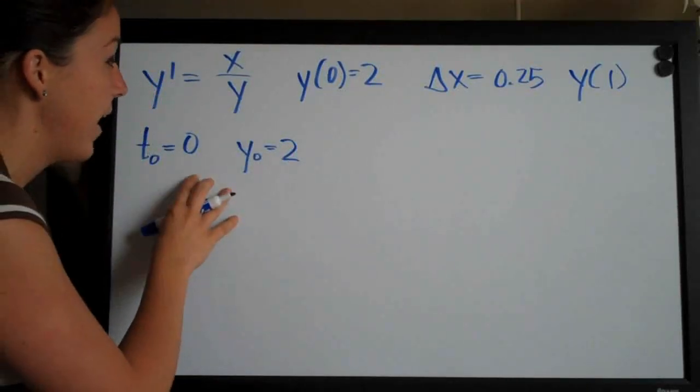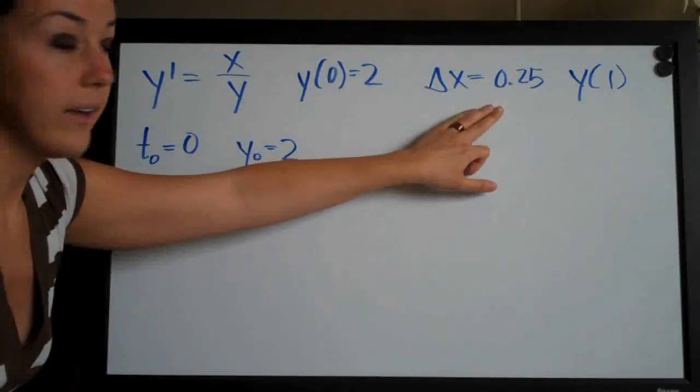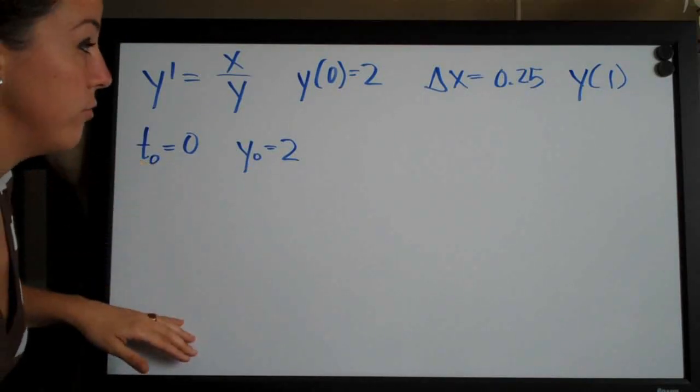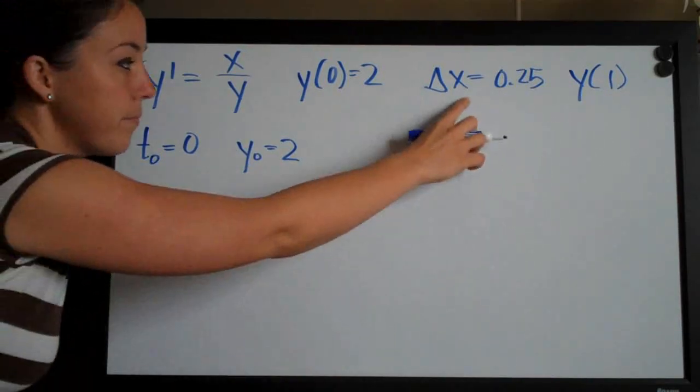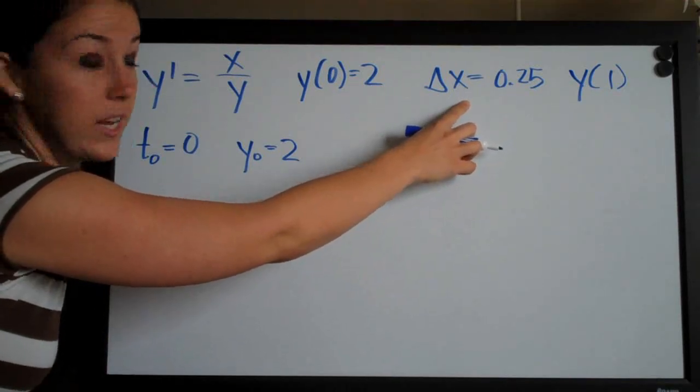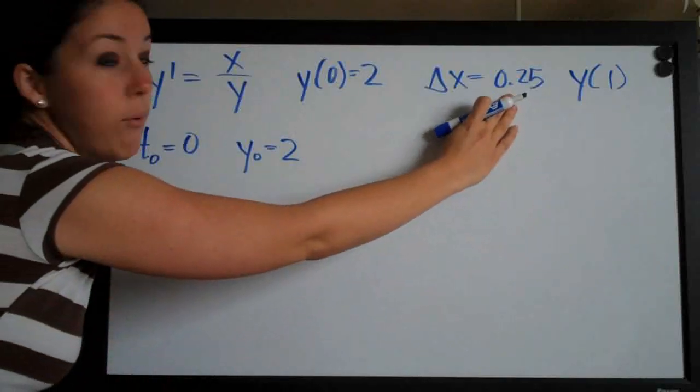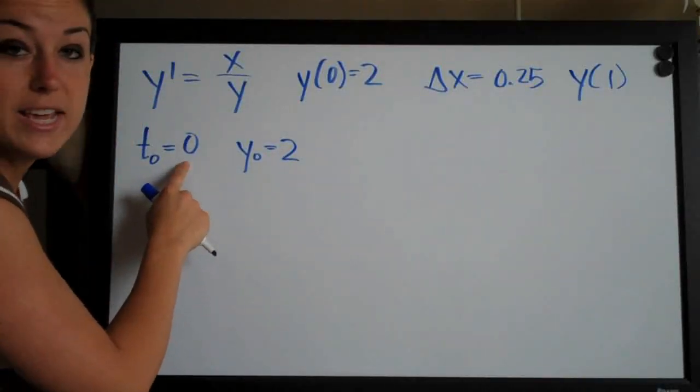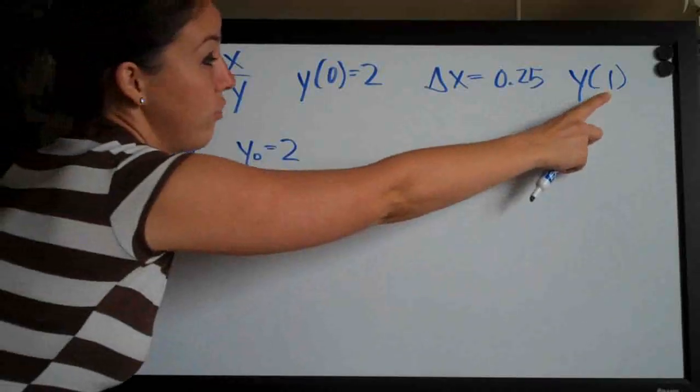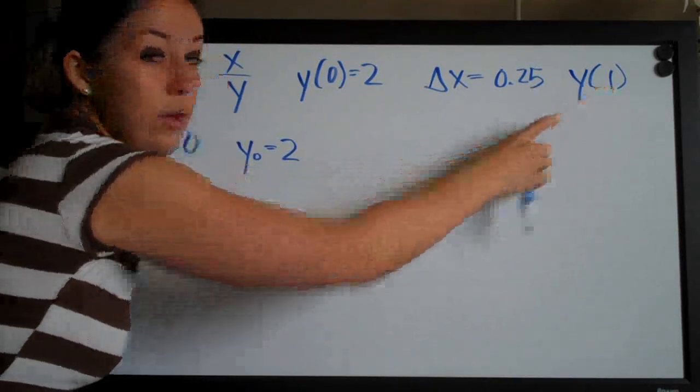Now that we've done that - we always pull those from the initial condition - we use delta x, whatever they've given us, to build out our column of t values. And the way that we do that, they've asked us to use delta x or change in x as 0.25. So we're going to be adding 0.25 to the previous value of t each time, and we're going to do that until we get to, because this is y of t, so until t equals 1.